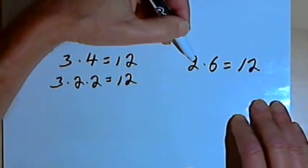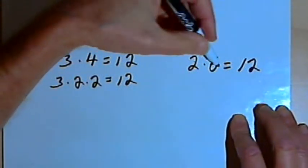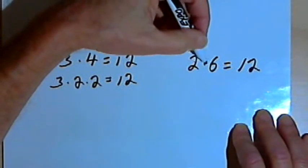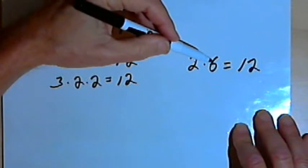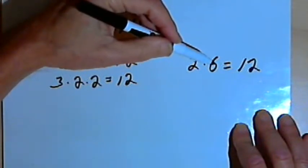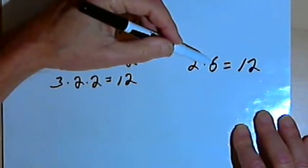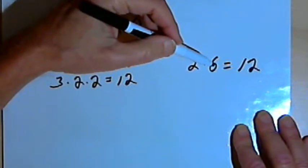Now let's look at what happened when I did the 2 times 6. I said that 2 times 6 equals 12. 2 is a prime number, but 6 is not. 6 is a composite number. So I'm going to break that down into prime factors. I'm going to break it down into 2 times 3.